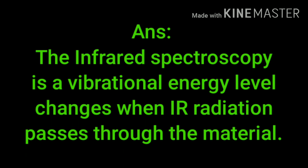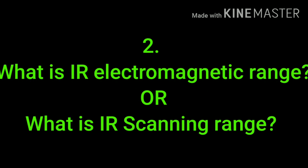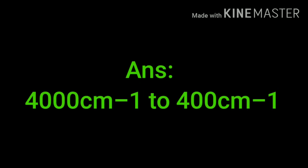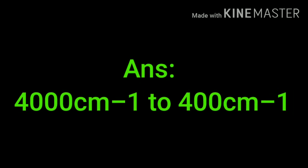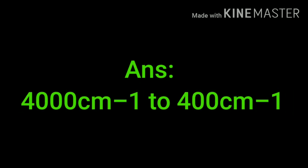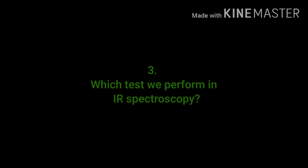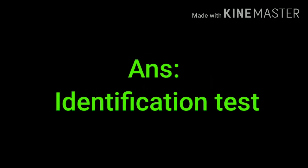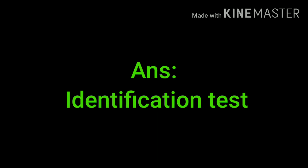The next question is: what is the IR electromagnetic range, or what is the IR scanning range? The answer is 4000 cm⁻¹ to 400 cm⁻¹. Which test do we perform in IR spectroscopy? In IR spectroscopy, we perform the identification test.